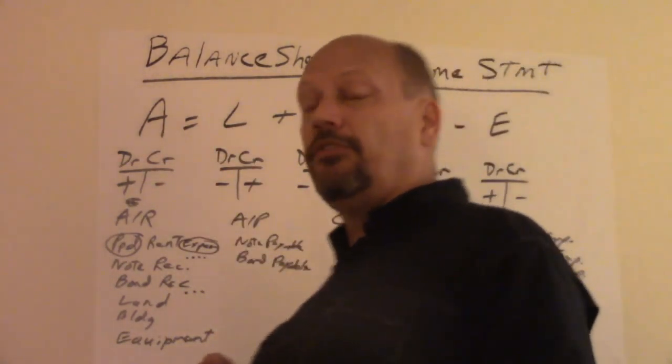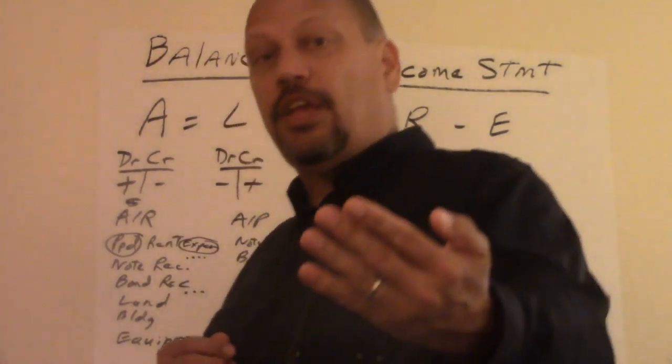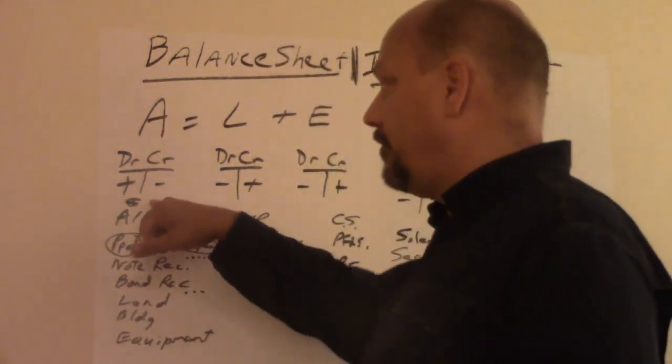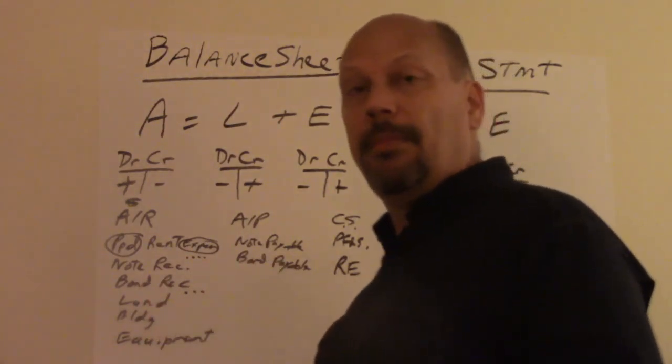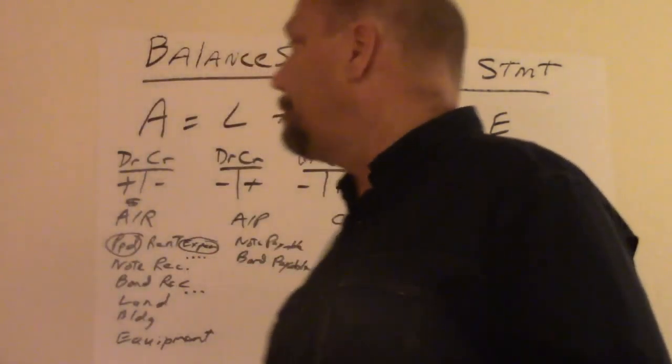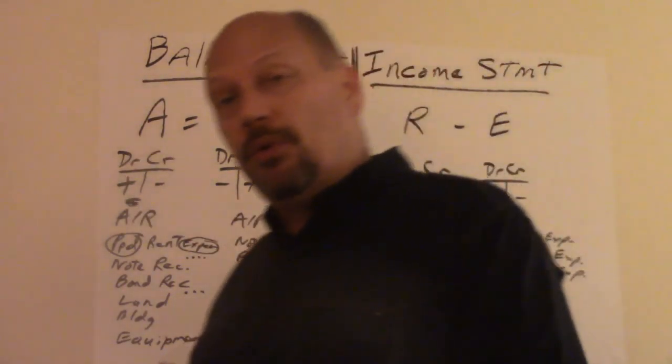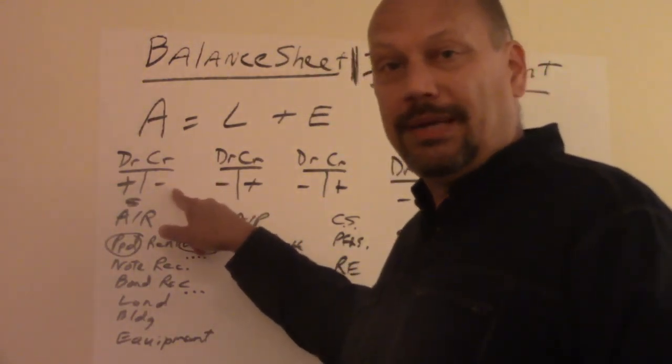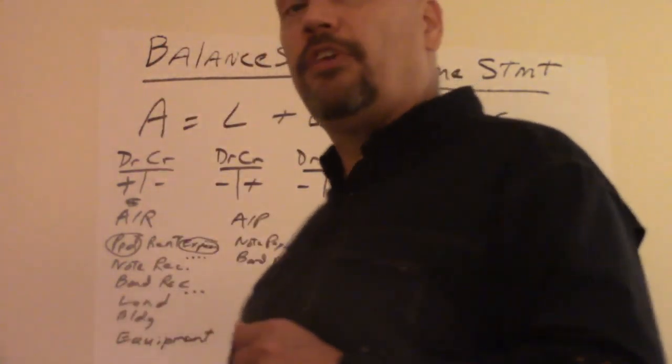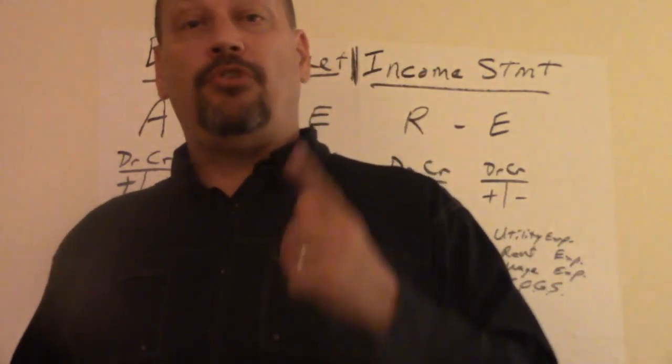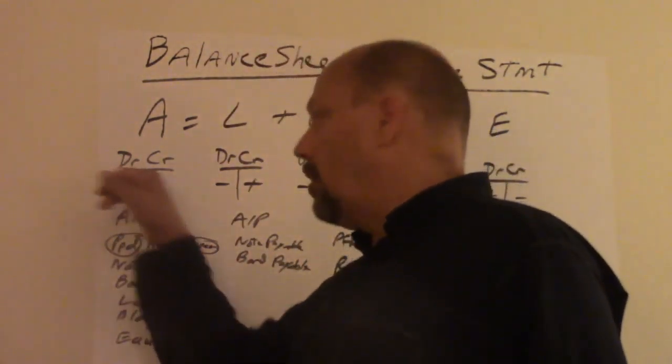Say it another way: if whatever happened in that transaction, say you receive money, that's an asset. Different assets are cash, accounts receivable, prepaid rent expense, note receivable, bond receivable, land, building, equipment. Those are all assets, something you'd like to have, something of value. If you receive any of those, such as receiving cash, you debit cash. If you gave cash to someone else, you credit cash because cash went down.